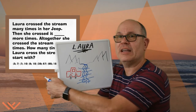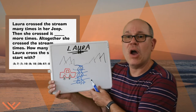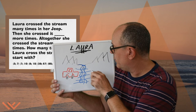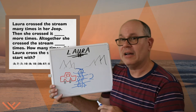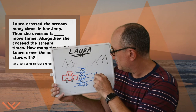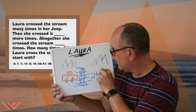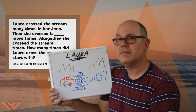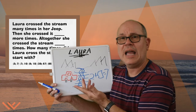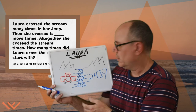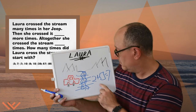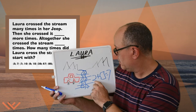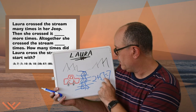Let's take a look at the standard algorithm. We know that she crossed it two times, and I'm going to say plus here, leave this blank, and that equals seven. How would you figure that out? You could subtract two from each side.